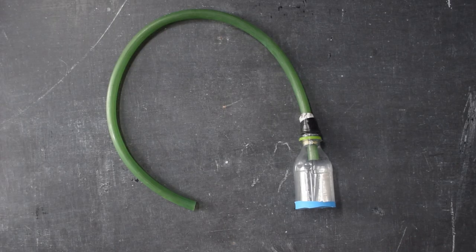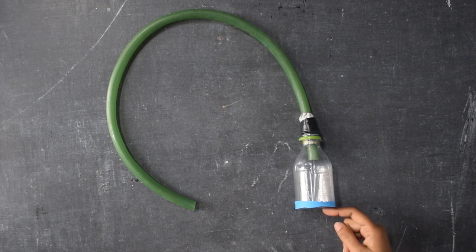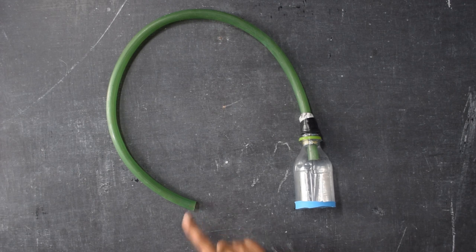Now the stethoscope is ready. You can place this end, we can call it the balloon end, on top of your friend's chest where the heart is and the pipe end in your ear and see what you hear.